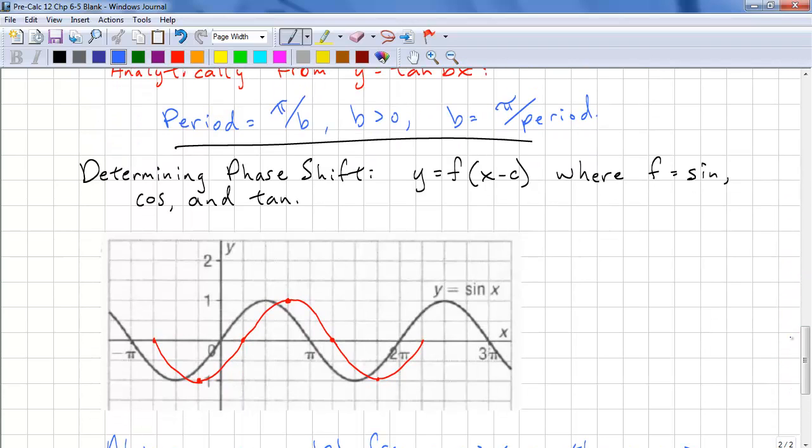Next, we need to determine the phase shift. If we have the transform function y equals f of (x minus c), where f can be sine, cosine, or tangent, we need to calculate the shift from the y-intercept of the original function. For sine, we need to define the shift of (0, 0). For cosine, we have (0, 1). And for tangent, we have (0, 0).